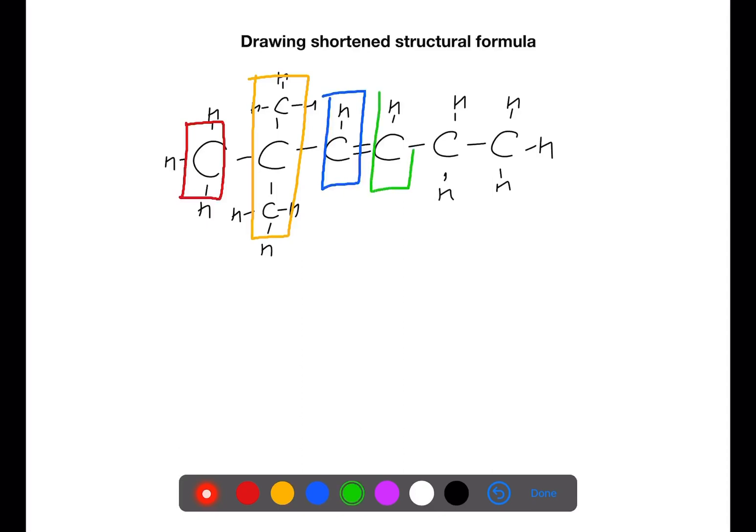You can see that I'm doing this by highlighting them in different colors. Within the first section which is highlighted in red we have CH3. Within the second section we have a carbon with two carbon branches of CH3 attached. These are written in brackets.